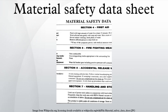Section 15, Regulatory Information. 15.1. Safety, Health and Environmental Regulations/Legislation Specific for the Substance or Mixture. 15.2. Chemical Safety Assessment. Section 16, Other Information. The European Chemicals Agency has published a guidance document on the compilation of safety data sheets.